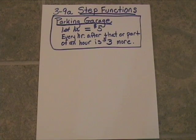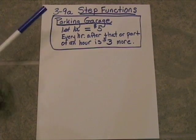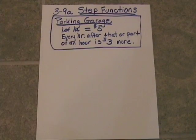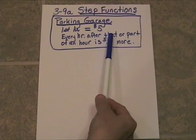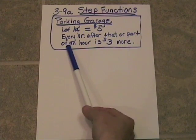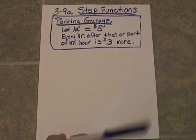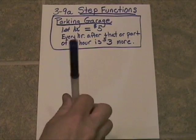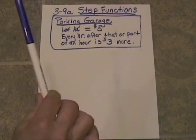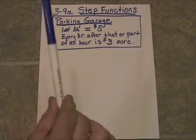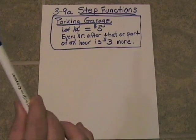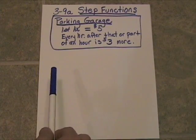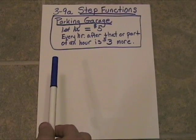So here's what the sign says: Parking Garage in his front yard. First hour is $5. Every hour after that, or part of an hour, is $3 more. In the heat of the summer, people come out. They start parking in his front yard at 6 o'clock in the morning just so they can be in line to get into that pool. We're going to take a look at what kind of money Sean's going to make.